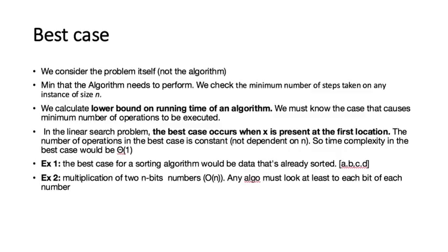For instance, the best case. We consider the problem itself and not the algorithm, and this is the minimum that the algorithm needs to perform. We check the minimum number of steps taken on any instance of size n. We calculate the lower bound of running time of an algorithm. It's not ideal because it could take forever for an algorithm to run, but at least we can find a bound. Ideally it would be O(1).